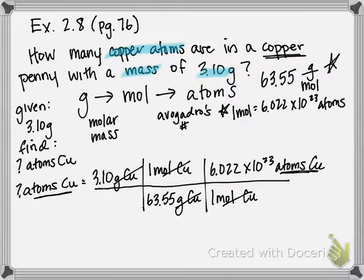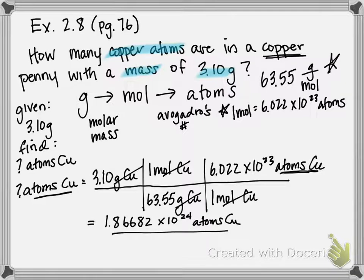If you multiply across 3.10 times 6.022 times 10 to the 23rd, you get 1.86682 times 10 to the 24, technically atoms of Cu. And on the bottom 63.55 times 1 is 63.55 grams of copper.